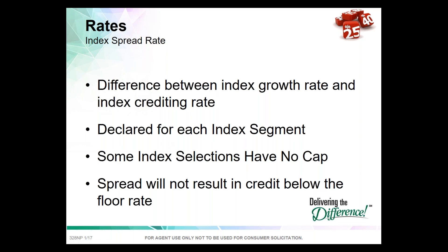Once the segment starts, the spread rate cannot change on the client halfway through the measuring period. Many index selections with spreads have no caps — for North American, that would be an example as well. The spread rate will not result in a credit below the floor rate, meaning if the index gets a positive 2% and the spread is 5%, it won't turn that into a negative 3%.